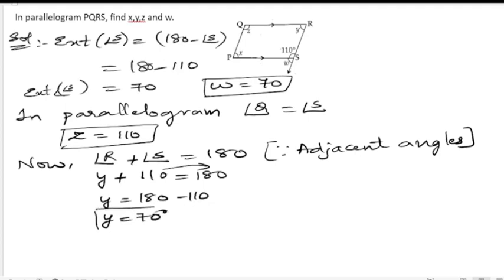So angle y is also 70, and we know that opposite angles are equal. So we can write angle P is equals to angle R. So x is equals to y. R is y, so x is equals to what is y? Y is 70 degrees.